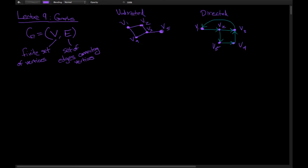We have two different types of graphs. One is an undirected graph, and the other is a directed graph. In an undirected graph, if you think of the edges between two nodes as a bridge, this is a bidirectional bridge — you can go from V1 to V2 or V2 to V1. In a directed graph, you have one-way bridges between nodes where you can only go from V1 to V2, but you can't take the same bridge back from V2 to V1.